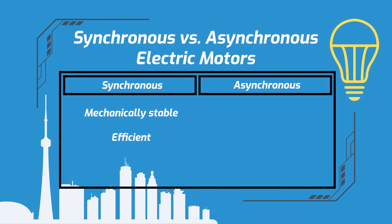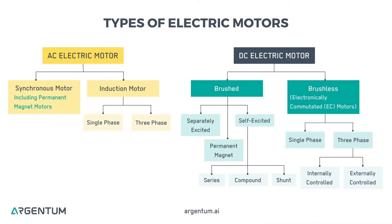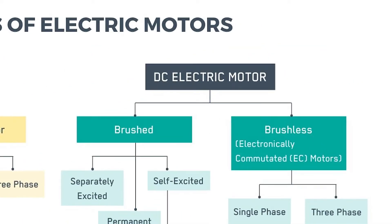Synchronous motors are generally more mechanically stable and efficient than asynchronous motors, and DC motors are synchronous. Asynchronous motors, on the other hand, have a lower cost and are generally more convenient to maintain. Direct current, or DC, motors are usually characterized by whether or not their design includes brushes. That's why people might compare DC brushed to DC brushless motors.